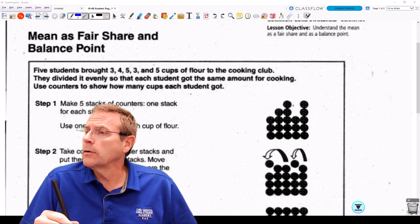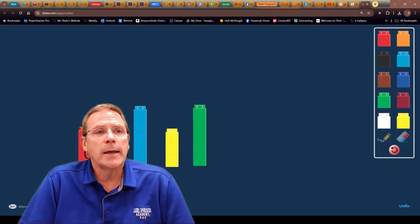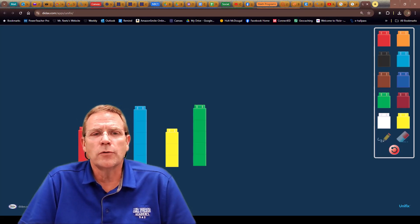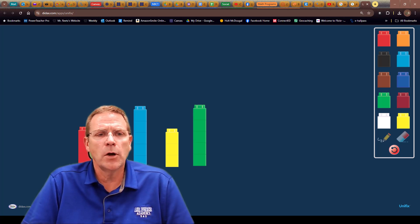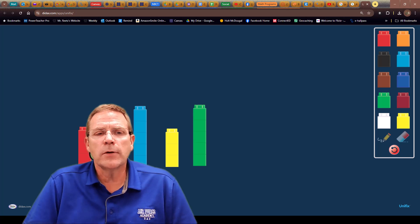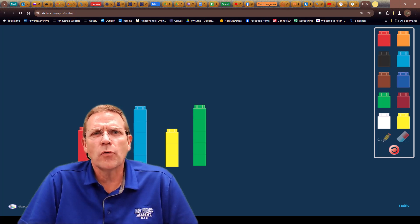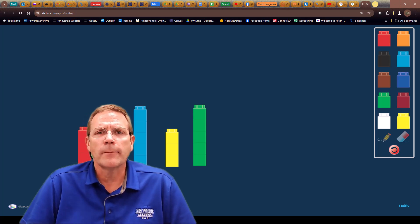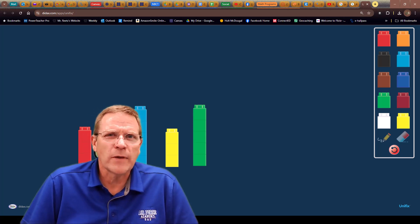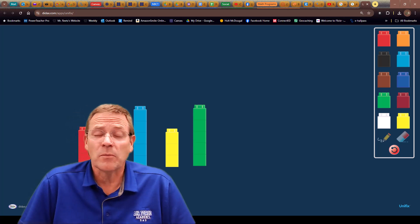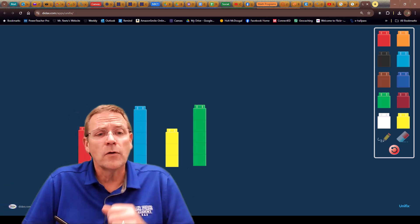It says to use the counters to find how many cups each student got. We are going to use this page. It gives us some online unifix cubes that we can stack, which I've already got these stacked and ready to go. And we can use these to figure out what a fair share looks like or what a mean or average of the data value looks like. Now, I'm not a big fan of this being called a fair share because it's not really fair that the kid who brought five cups of flour is having to give his cups of flour to the kids who only brought three cups of flour, but hey, so be it.